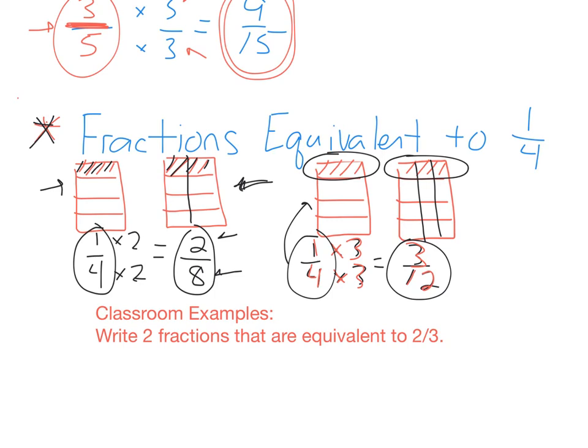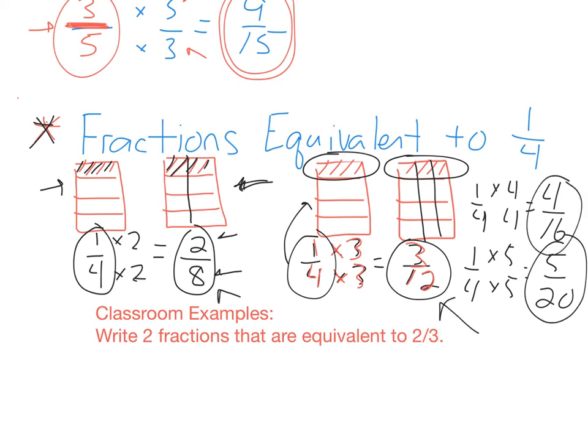Now I could get more and more fractions equivalent to one-fourth. Because I could take one-fourth and multiply by 4 over 4 and get 4 sixteenths. Or I could take one-fourth and multiply by 5 over 5 and get 5 twentieths. I could do this all day long. And all of these fractions are equivalent to one-fourth. Every single one of them. It's the same thing. It's just split into more pieces. Okay? So your classroom example is write two fractions that are equivalent to two-thirds. There you go. Good luck.